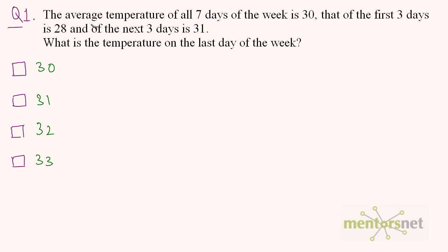We have been given the average temperature of all 7 days which is 30. So 30 is equal to the sum of the temperatures of all 7 days — let us term it as S — divided by 7. Therefore we can get the sum of the temperatures of all days as S equal to 30 times 7, which is 210.